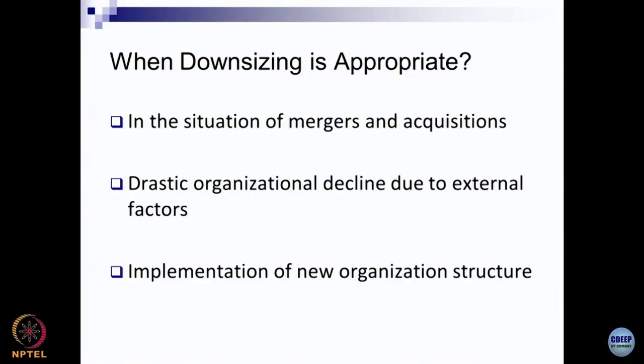Due to great advances in technology, particularly related to IT, robotics, automation, and machine learning, many business operations and processes can be redesigned. Competition is increasing because of these possibilities. If one organization does not use the benefit of these emerging technologies, another may, and as a result, organizations that do not adapt may lose out in the marketplace. They sometimes have to create new organizational structures due to changes in technology or regulatory environment, making downsizing necessary.